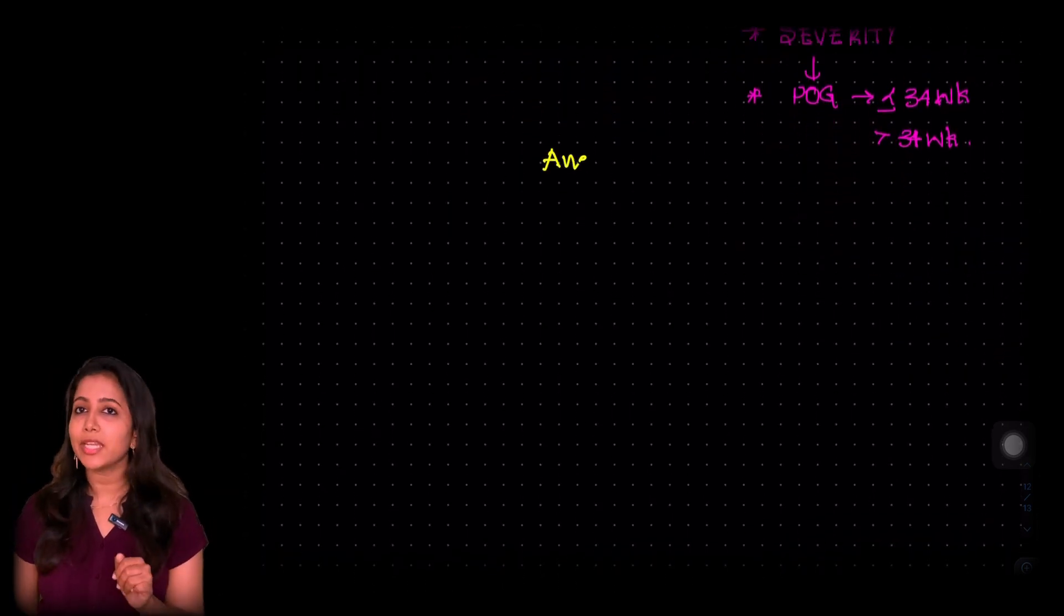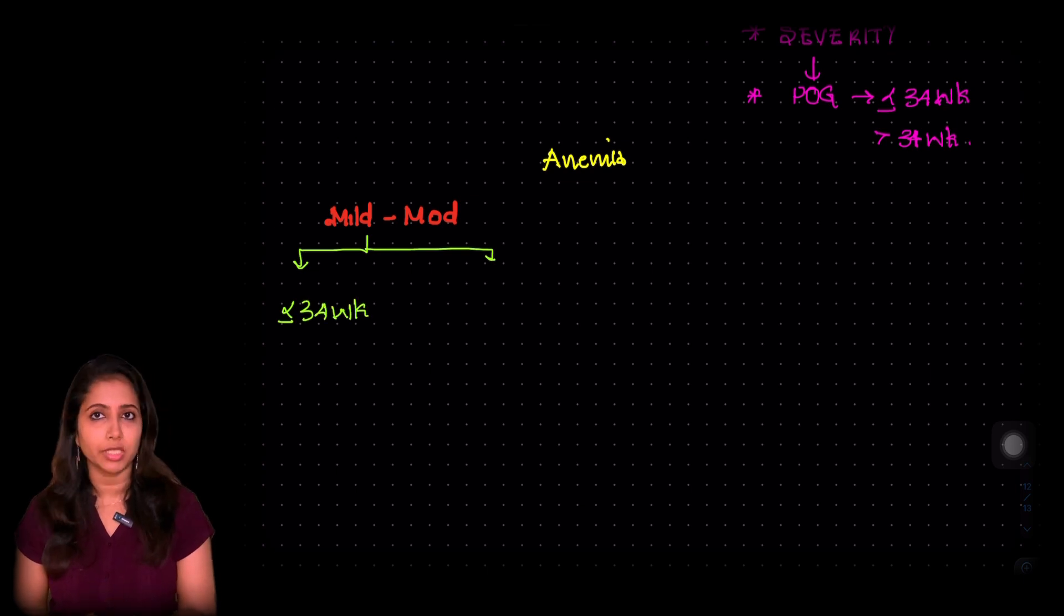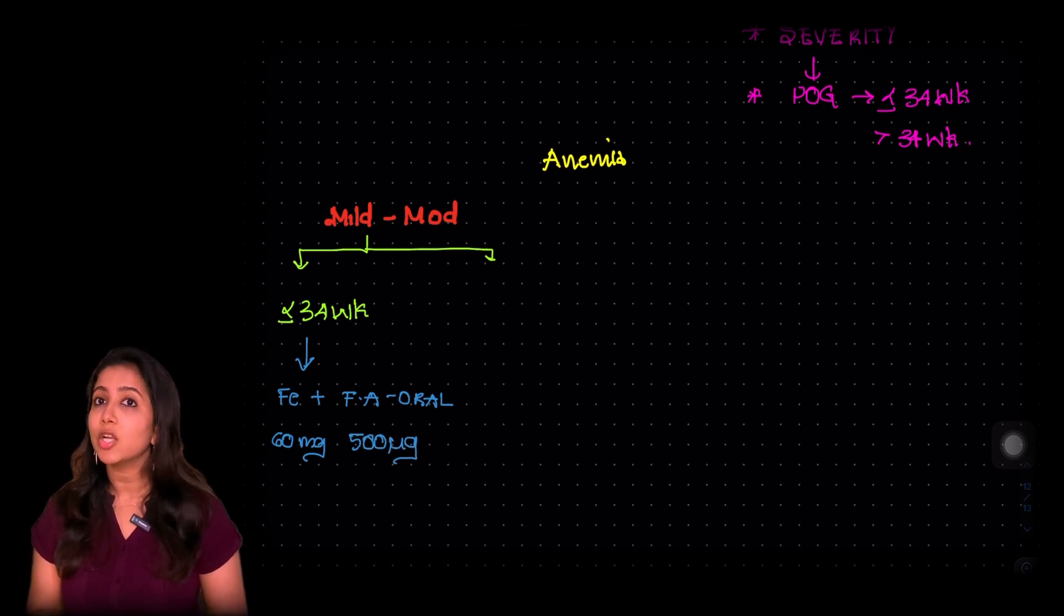So when the scenario shows there is mild to moderate anemia, the next thing I want you to look at is the period of gestation. If it is less than or equal to 34 weeks, we have plenty of time to wait. So we would be giving the patient oral iron. If I am more elaborate, we would be giving her 60 mg of elemental iron and 500 mcg of folic acid twice daily.